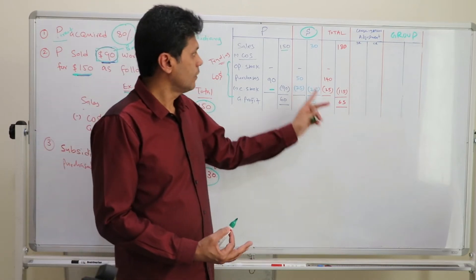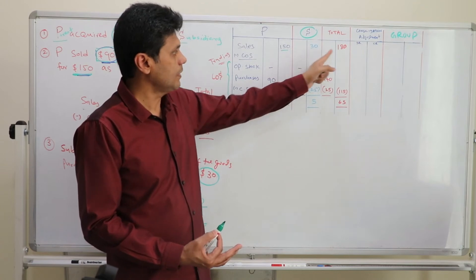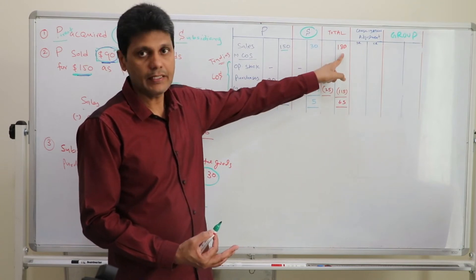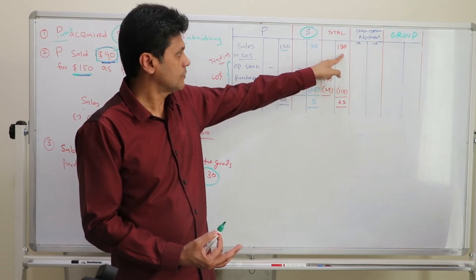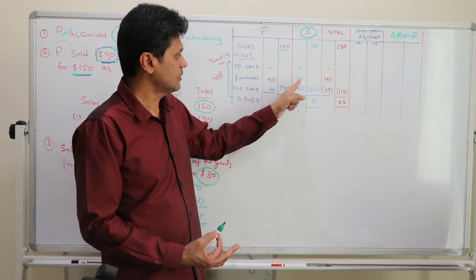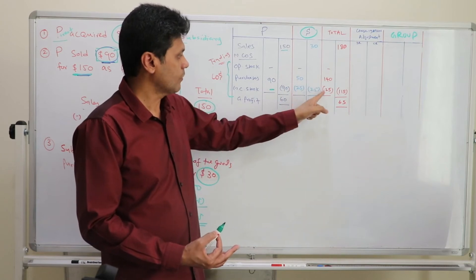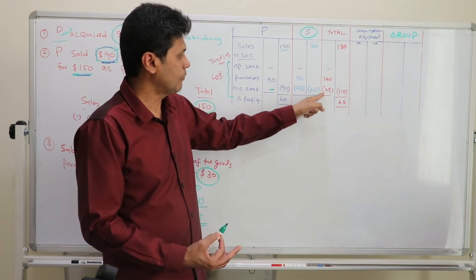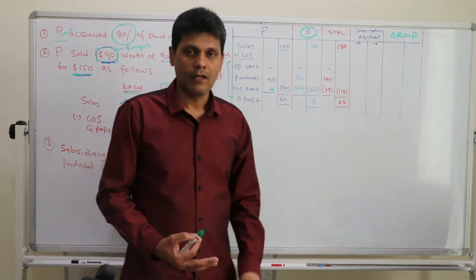When you take the total of the parent company and subsidiary combined: total sales are $180, total purchases are $140, the closing stock will be $25, and the total combined profit is $65.